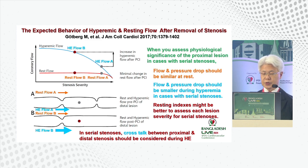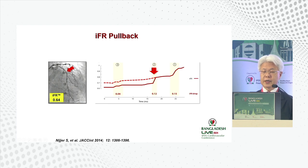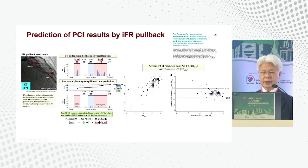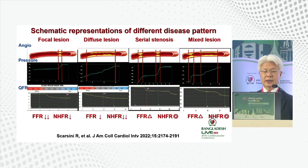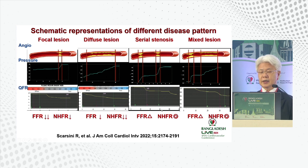In serial stenosis, crosstalk between proximal and distal stenosis during hyperemia must be considered. Resting indices allow you to clearly speculate the pressure curve after treatment, and there is good correlation between speculation and real results. In summary: focal region — FFR is better; diffuse region — resting indices are better; serial stenosis — resting indices are better; mixed region — resting indices should also be preferred.